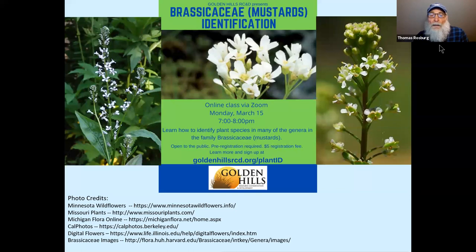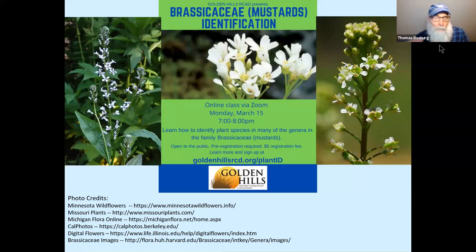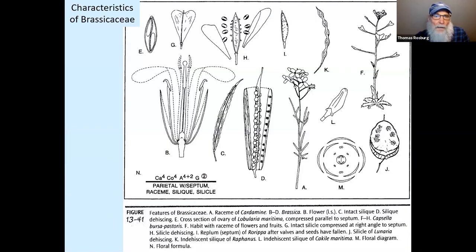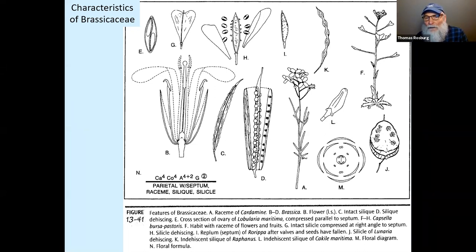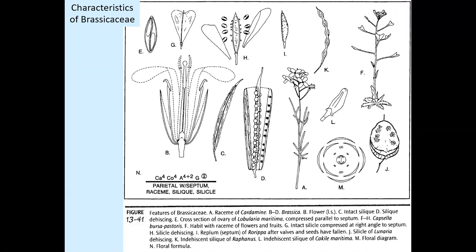In North America, non-native mustard species account for about 15 percent of all mustard species — remember that number, because we're going to compare it to Iowa in a little bit. The mustard family is easy to recognize at the family level, but it gets harder when you try to determine which species you have. One of the reasons is quite a bit of variation in leaf morphology.